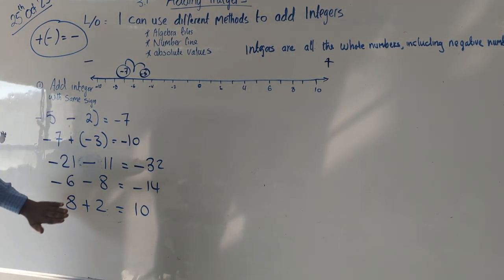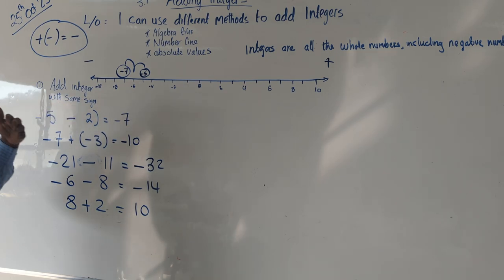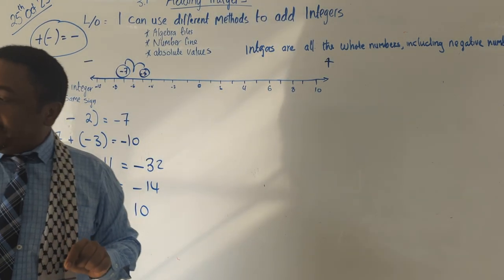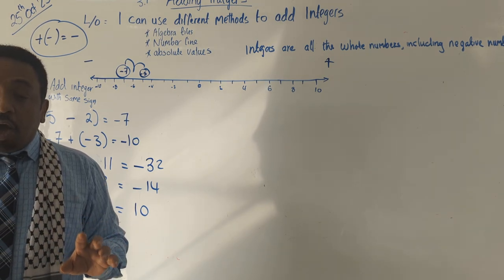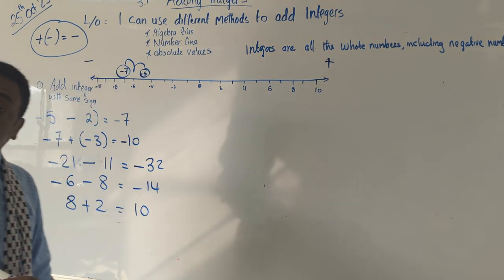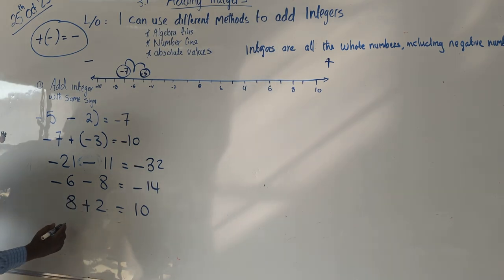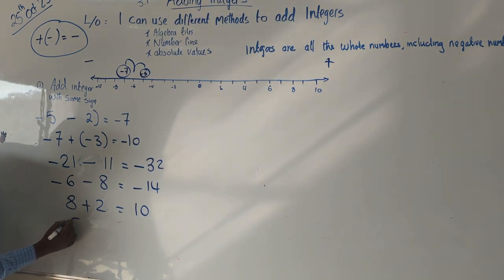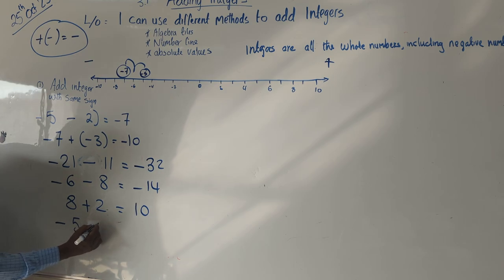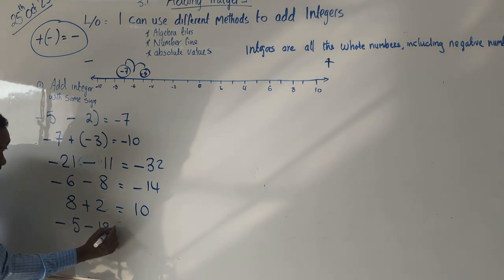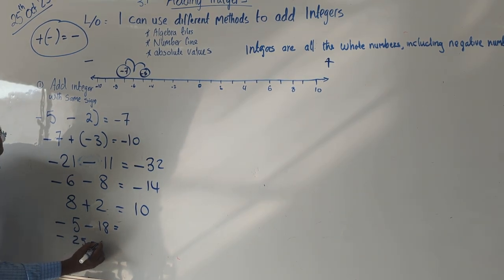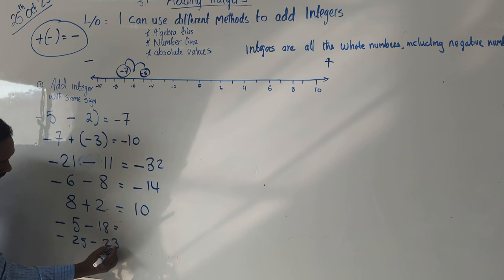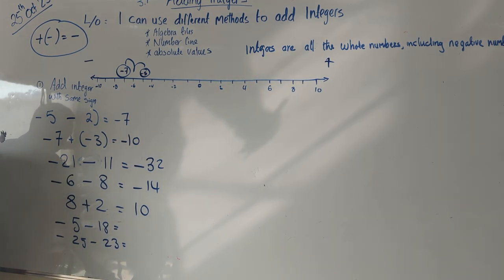So now you all understand how to add integers when they have the same sign. Is everybody happy with that? If you are, can you answer these questions for me: negative 5 and negative 18, and also negative 25 and negative 23?